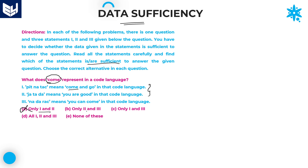Option B: only statements 2 and 3. In statements 2 and 3, 'cum' is present in both. The common code in these two is 'ja' — not there; 'ta' — not there; 'da'. So 'you' equals 'da'. Therefore 'cum' is not 'da'; cum is either 'na' or 'rac'. You don't get the code for 'cum' by using statements 2 and 3 combined. So eliminate option B.